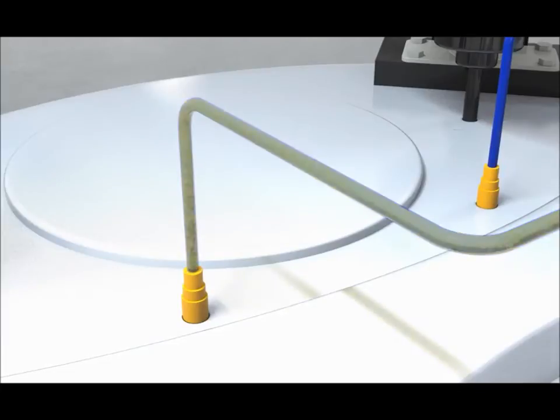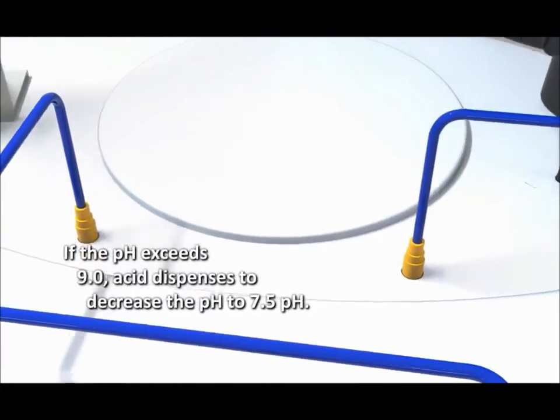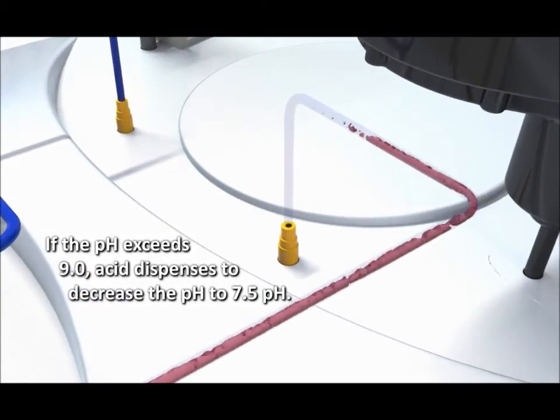In the event the pH increases to over 9.0 pH units, the acid dispenses to decrease the pH to 7.5.